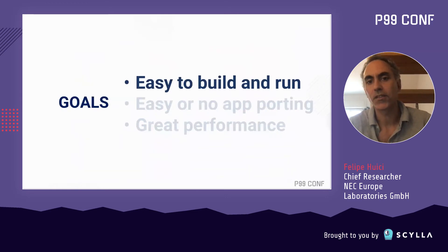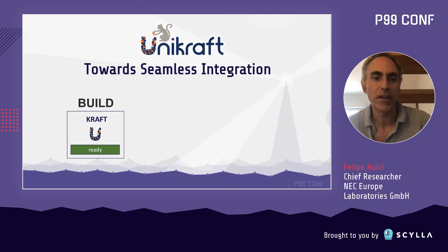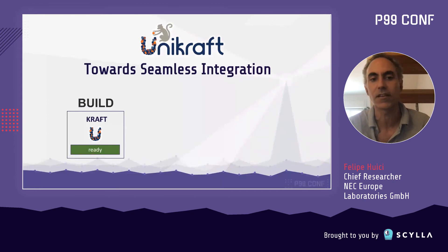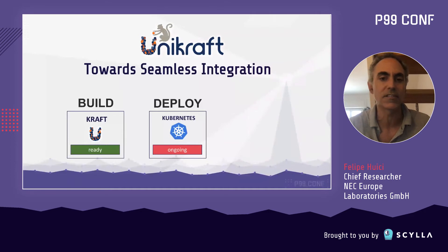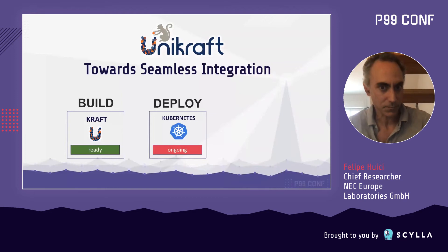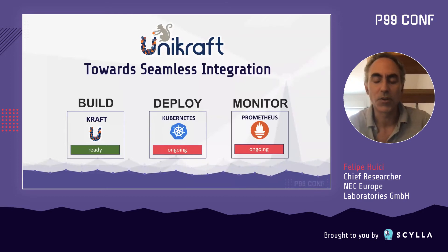Going back to the goals, the first one is that it should be easy to build and run. We cater to this in three ways: we have a tool called Craft that wraps around the build tool to make it easy to build images; for deployment we have early integration with Kubernetes where you use kubectl and the standard dashboard to deploy unikernels without modifying Kubernetes itself; and for monitoring once unikernels are deployed, we support Prometheus.